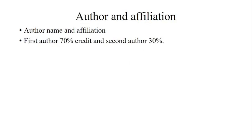The second step in research paper writing is author name and affiliation. Always remember that the first author gets 70% of the credit and the second author gets 30%. If there are many authors, the remaining authors share within that last 30%, but the first author always gets 70% credit.